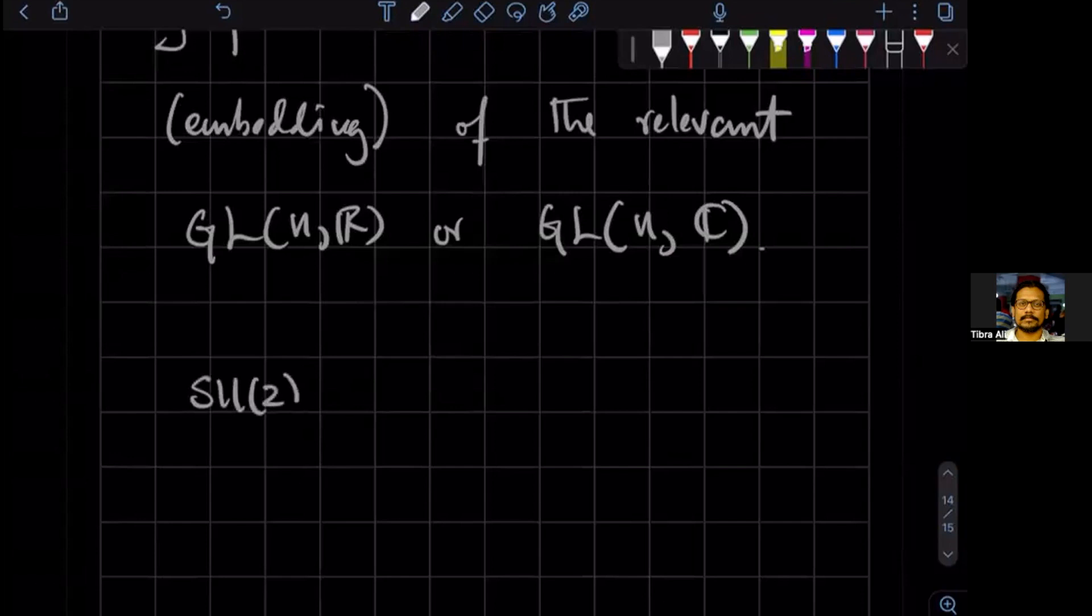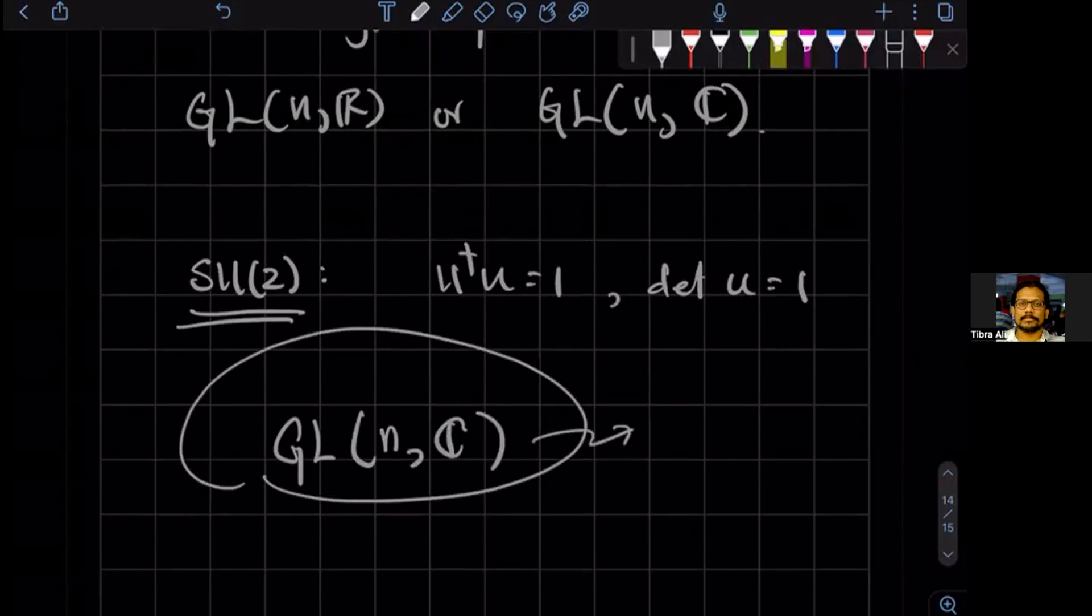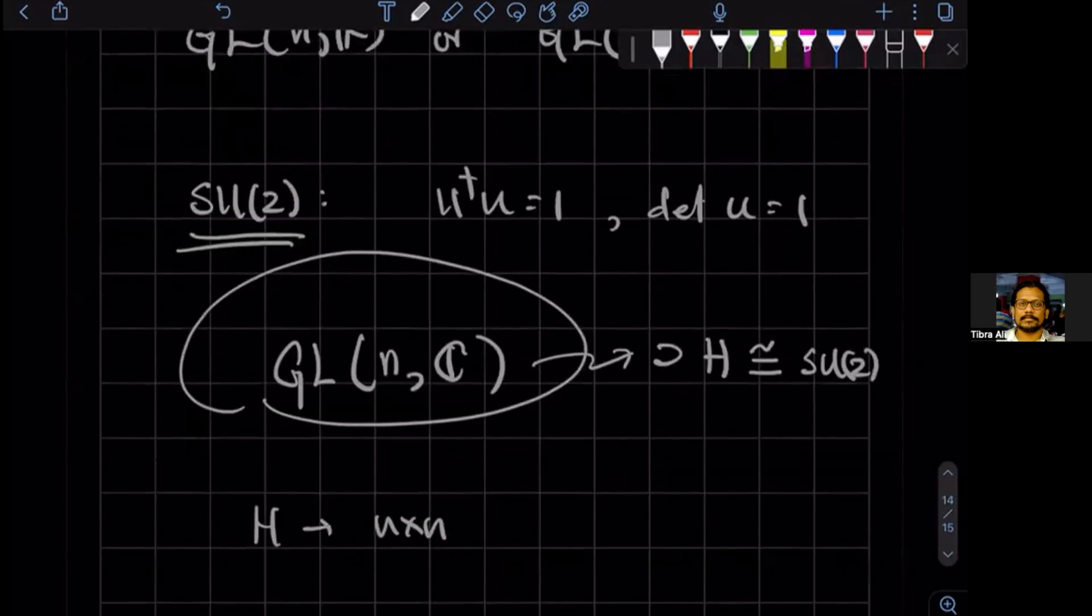What I mean is that suppose you take a group like SU2 - it's a matrix group of two by two unitary matrices with determinant one. But there could be a representation of this group because it's a complex group. For some given n, you could find a subset of this group H such that it's isomorphic to SU2, where H is some n by n set of matrices. This would be an n by n representation, an n-dimensional representation of SU2.